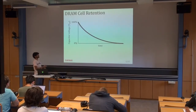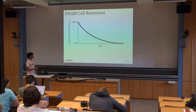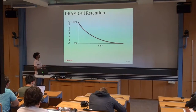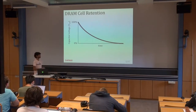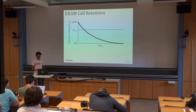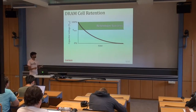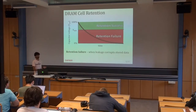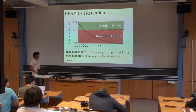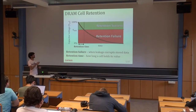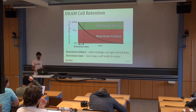Here's a diagram showing capacitor voltage on the y-axis and time on the x-axis. The capacitor starts out fully charged and over time the voltage drops, following a roughly exponential characteristic. We define a point called Vmin above which we can tell what data is originally stored in the cell — a retention success. As soon as the capacitor voltage drops below this line, we have a retention failure. We define a retention time as how long we can tell what data was originally encoded in the cell.